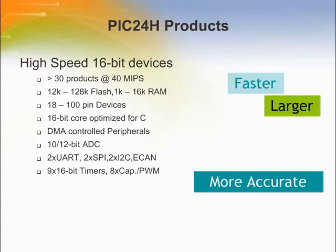Compared to the PIC24F products, the PIC24H runs as fast as 40 MIPS, offers more flash program and data memory, and the DMA enhances overall throughput and makes the CPU more efficient. It also has a more complete set of peripherals. If an application requires more throughput, the designer could certainly use this family of products.